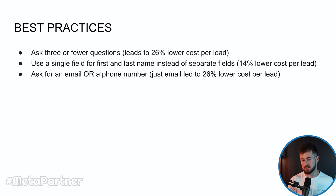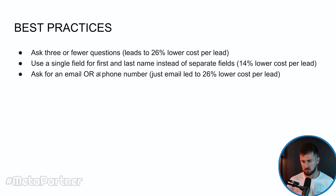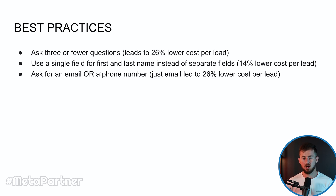If you use a single field for first and last name instead of separate fields, you can get a 14% lower cost per lead. And if you're asking for either email or phone number, asking for just email led to a 26% lower cost per lead. Again, these are averages, but things to keep in mind when creating this campaign to optimize it the best.